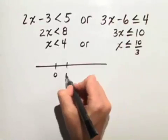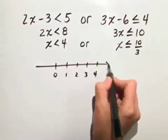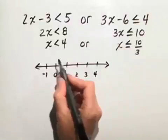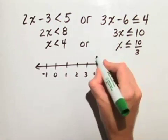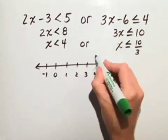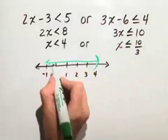Let's take a look at our number line. First, we have x is less than 4. So starting at 4, with a parenthesis, because we have a strict inequality, we draw our arrow to the left.